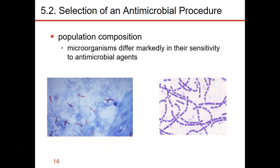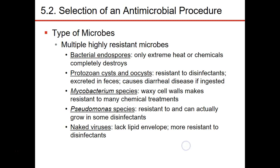The population composition is going to influence our antimicrobial choice. If you have endospore formers or if you have mycolic acid producers, you're going to choose different chemicals or different mechanisms than you would if you had straight up E. coli that don't have as many protective mechanisms.